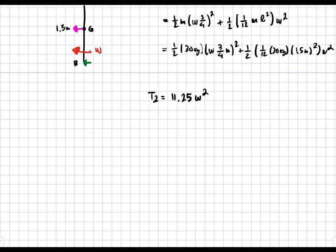Now we need to find the potential energy in state two. So V2 is just going to be equal to mgh2. And m is 30 kilograms, g is 9.81 meters per second squared, and h2 is just going to be equal to half of the length again. So three quarters meters or 0.75 meters. And when we multiply everything, we get 220.73 joules.